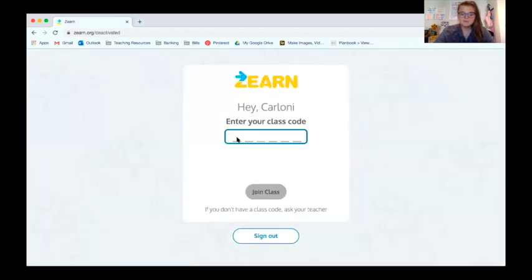Now I'm going to need my class code. So if you've already logged in, you probably won't need this. But if for some reason it asks you, it is U as in unicorn, Q as in quarantine, 7, D as in dinosaur, 6, G as in giraffe. Join class.